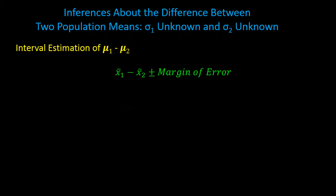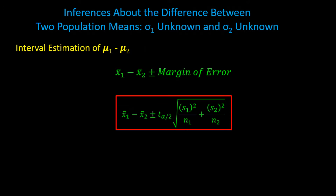From previous tutorials, the way to create an interval is to first calculate a point estimate, and then add and subtract a margin of error. An interval for the difference between two means would be x-bar1 minus x-bar2 plus and minus some margin of error. By adding and subtracting a margin of error, we get an interval with a lower limit and an upper limit.